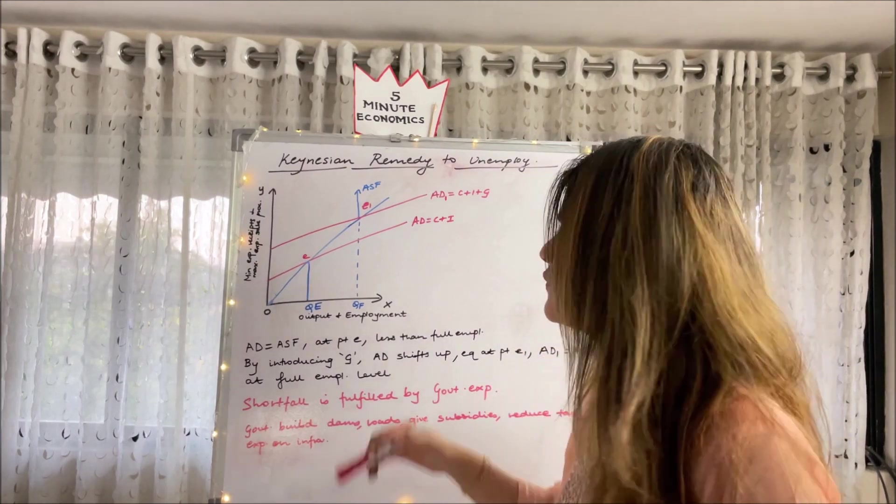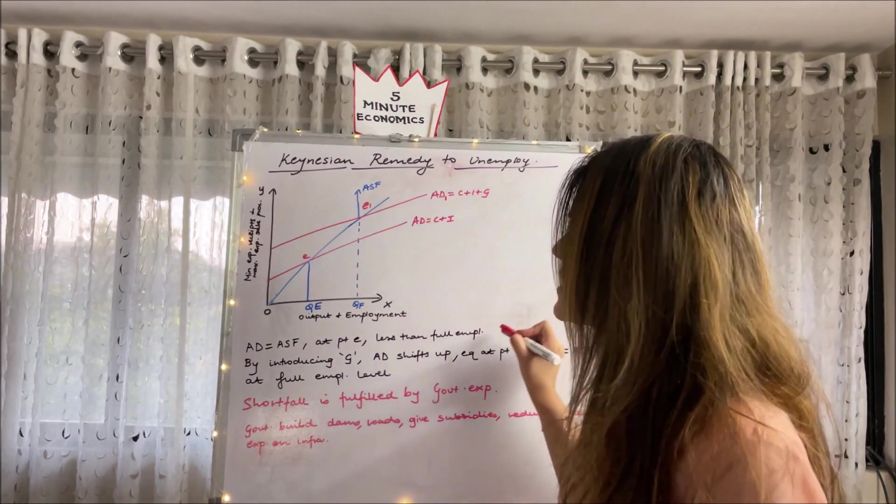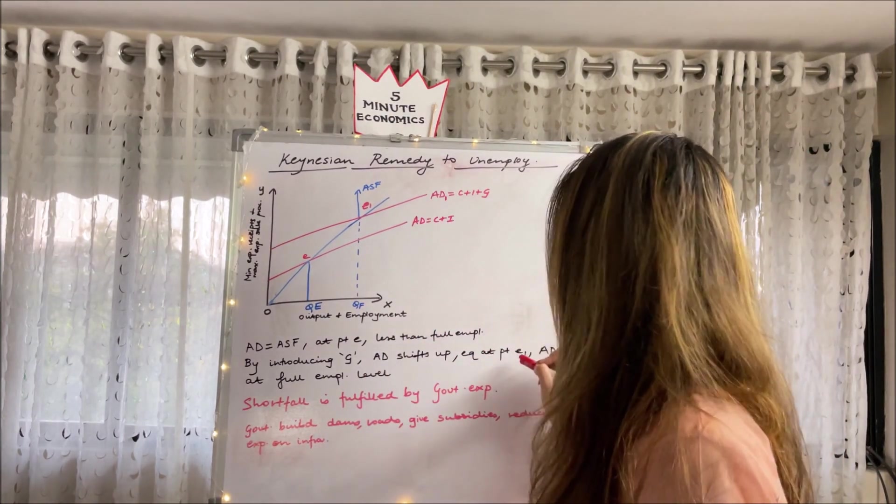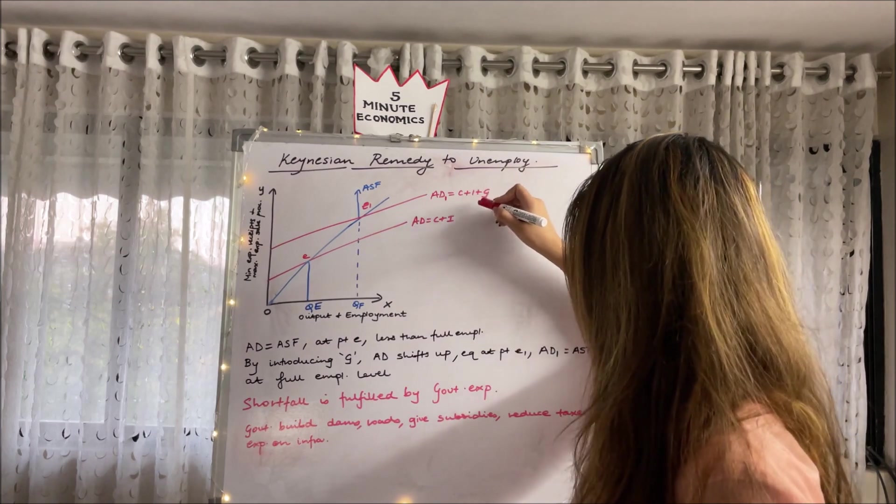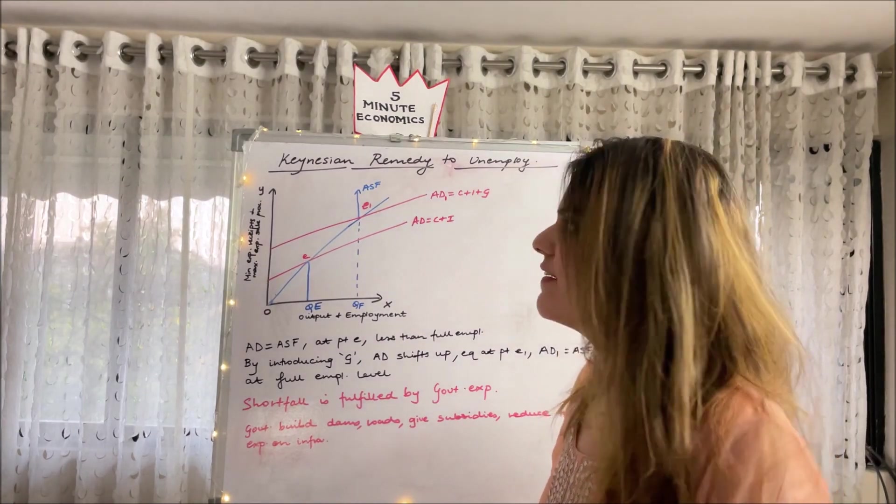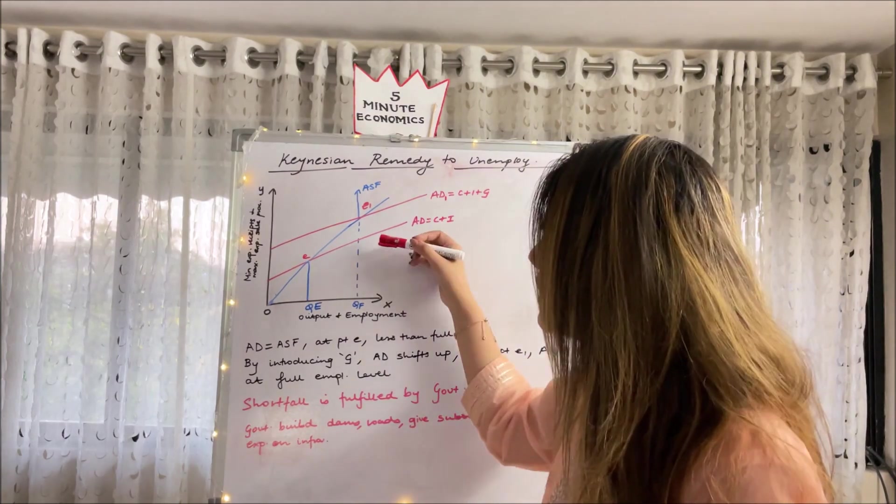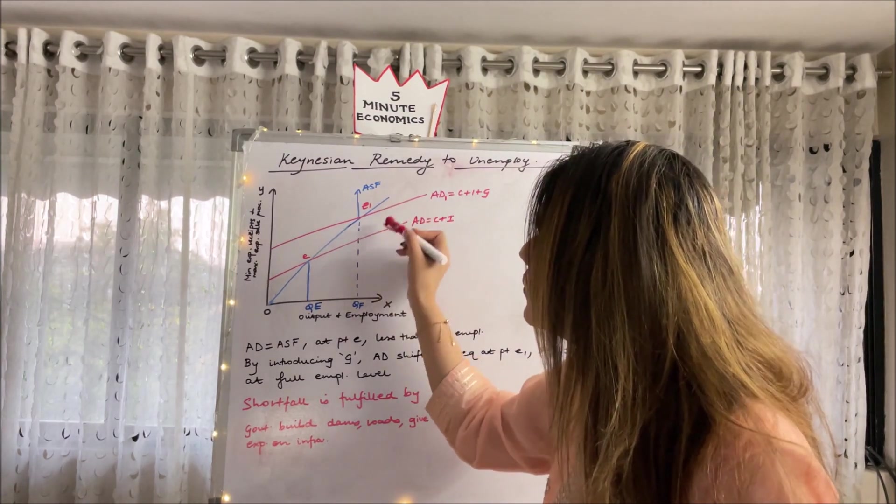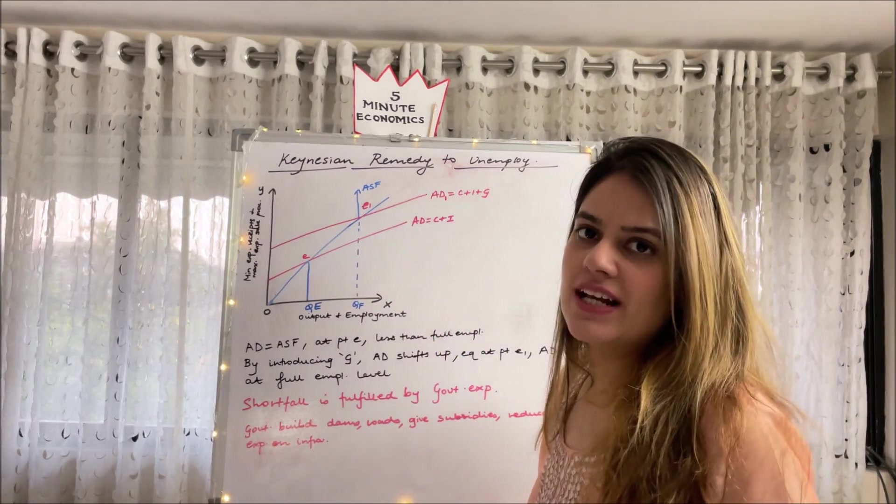But we have achieved equilibrium before we have achieved full employment. So what does Keynes say? He says that AD is equal to ASF at point E, which is less than full employment level. By introducing G, government expenditure, AD shifts up and now our equilibrium is established at E1. Here our new AD, that is AD1, is equal to ASF at point E1, which is the full employment level. So what do we notice? When government expenditure is introduced, now made a part of AD, our AD curve shifts upward and our new equilibrium is established at the full employment level.